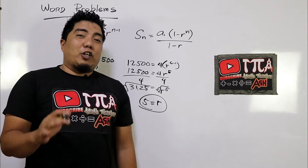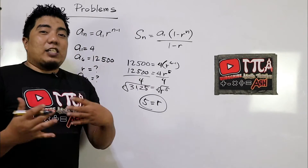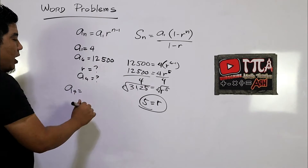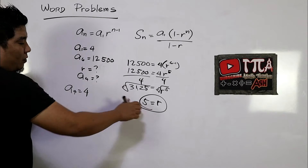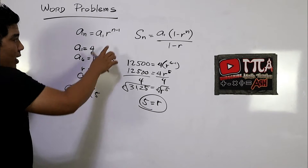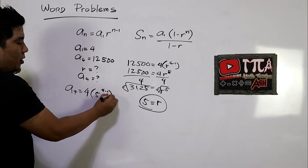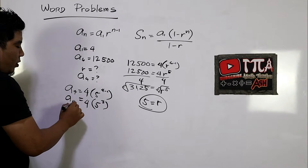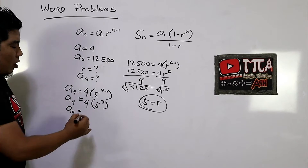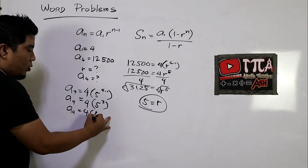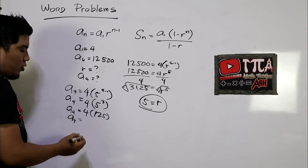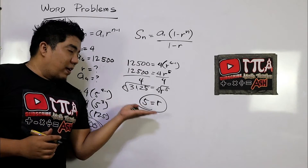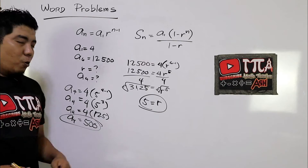We have already answered the first part — the common ratio r equals 5. Now for the next part: what is the fourth term? Using the formula, A sub 4 is unknown, the first term is still 4, r is 5, and n minus 1 gives us 4 minus 1 equals 3. So we have 4 times 5 to the power of 3. That is 4 times 125, which equals 500. Therefore, r equals 5 and the fourth term is 500.